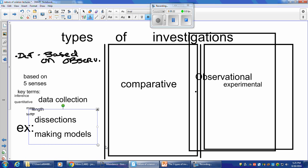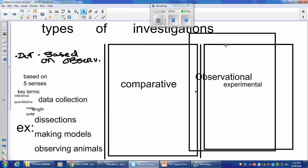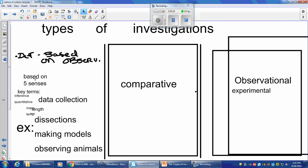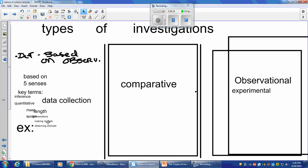Making models based on data, of course. And just observing animals in the wild or bird watching. Entomology. Collecting bugs. Or populations. So these are all examples. So our observational. When you lift this flap, you should see this. Observational investigation is based on observation. That's our five senses. Our key terms are to infer, which is to come to a conclusion. Quantitative, which means we are measuring some sort of quantity. And the types of quantities we have are mass, length, time, temperature. Data collection is very important. And our data is usually these quantitative. And our examples are dissections, making models, and observing animals. Those are just a few. Obviously there are more.